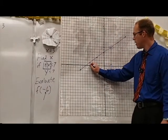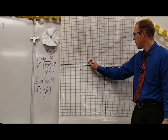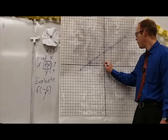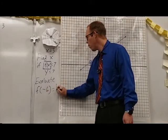If our x value is -6, that's here on the x axis, that corresponds with this point right there, and the y value at that point is 1. So f(-6) equals 1.